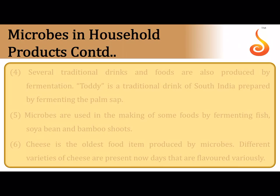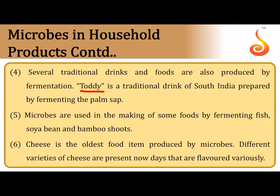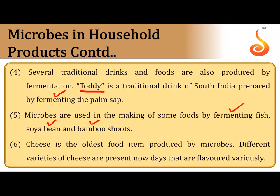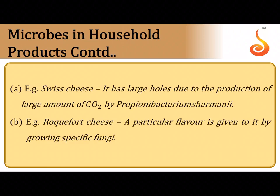Traditional alcoholic drinks like toddy — a drink of South India — are prepared by fermenting palm sap. Microbes are also used to enhance the taste of foods; they help in fermenting fish, soya bean, bamboo shoot, and cheese. Microbes are used as flavoring agents in cheese.